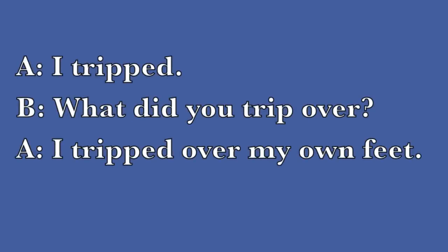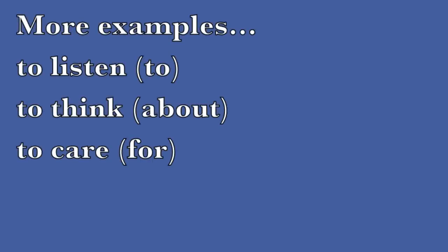Another example: to trip. To trip means to stumble. But if you want to know what caused the person to stumble, you need 'over' — to trip over something. For example: 'I tripped.' 'What did you trip over?' 'I tripped over my own feet.' Some more examples: to listen to, to think about, to care for. These aren't technically phrasal verbs because we're only placing a preposition after the verb to connect it to a noun.